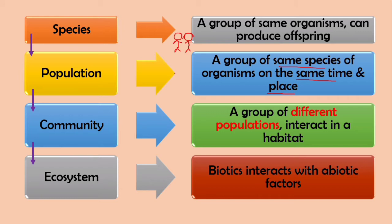Community is the group of different populations. Different populations interact in a habitat. For example, population manusia dengan population semut. Populations of humans and populations of the ants, we call it as a community.